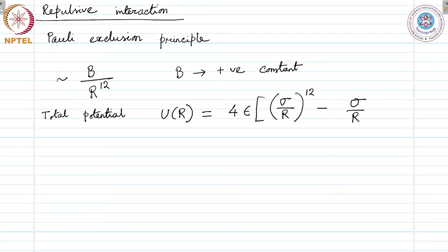We have new parameters σ and ε. In terms of ε and σ, we can write 4εσ^6 = A and 4εσ^12 = B. How can we plot this interaction?